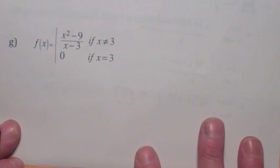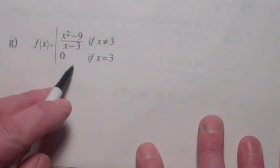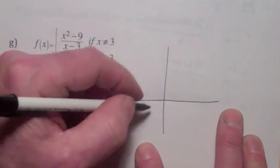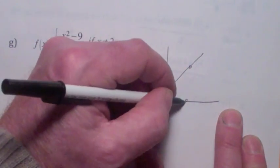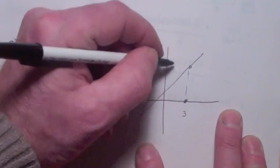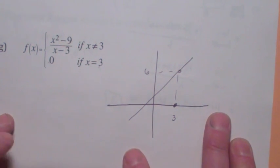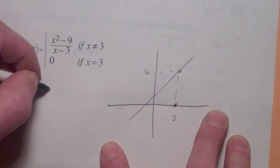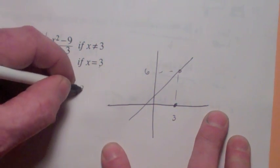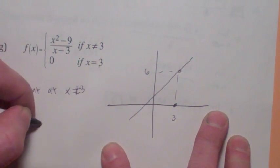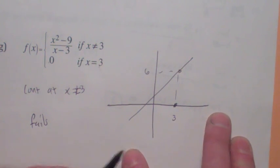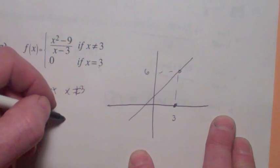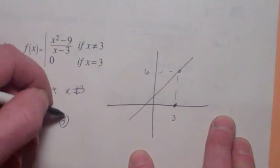This one is almost the same graph, except when x equals 3 we define it to be 0. So the graph looks almost exactly the same except at x equals 3, where we define it to be 0. It's not continuous at x equals 3, so it's continuous at all x except 3. Which condition does it fail? Is the function defined there? Yes, it's 0. Does the limit exist? Yes, it equals 6. Are they equal? No. So this is one that just fails the third condition.